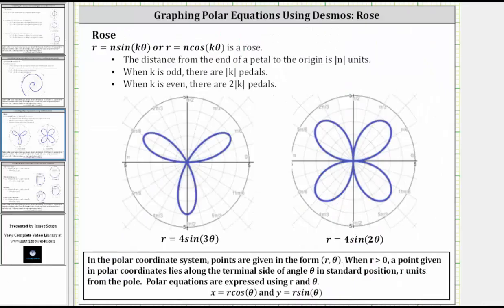Let's summarize our findings. The polar equations r equals n sine k theta, or r equals n cosine k theta, is a rose. The distance from the end of a petal to the origin is the absolute value of n units. When k is odd, there are the absolute value of k petals. When k is even, there are two times the absolute value of k petals. I hope you found this helpful.